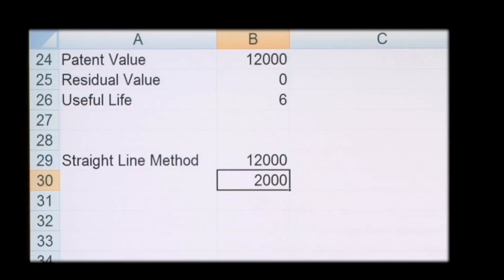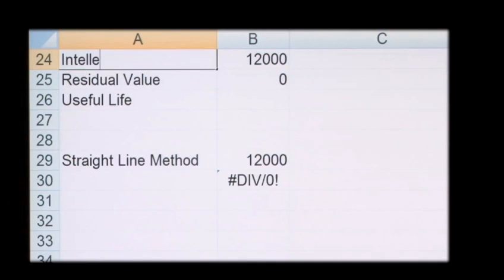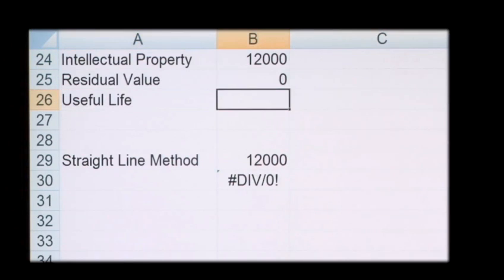So to recap, the calculation for amortization would be as follows. If we change the example from a patent to maybe intellectual property, we place a value on this of sixty thousand pounds and that property is going to remain in the company for the next 15 years until retirement.